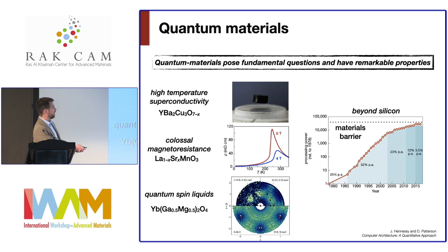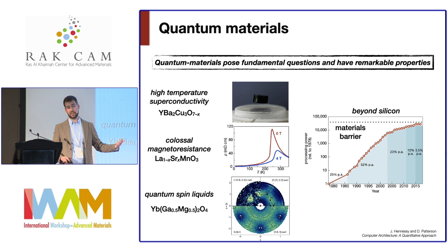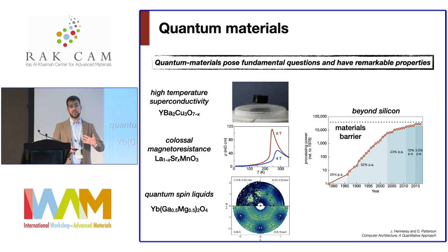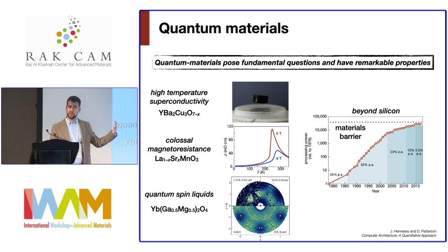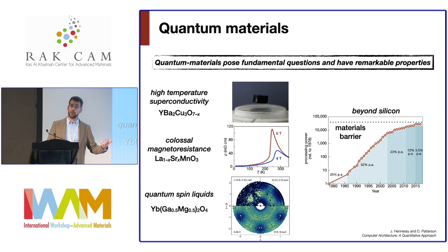In terms of computation, we're running up against the materials barrier with silicon. What we need are materials that can compute in different ways — storing and transforming information other than through conventional band semiconductors. Quantum materials with strong electronic correlations are one of the most promising avenues, whether through superconductivity and qubits, magneto-electrics coupling magnetism and electricity, or topological quantum computing such as spin liquids, which are a very hot topic in condensed matter physics.